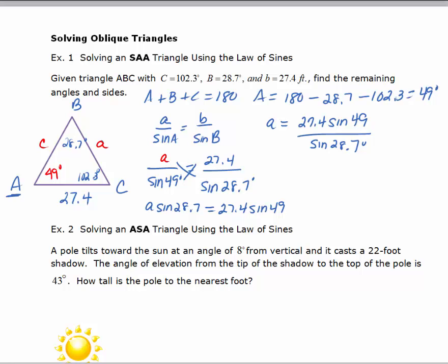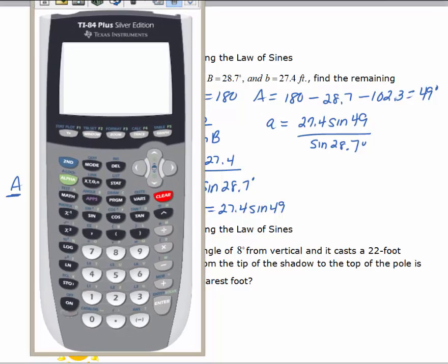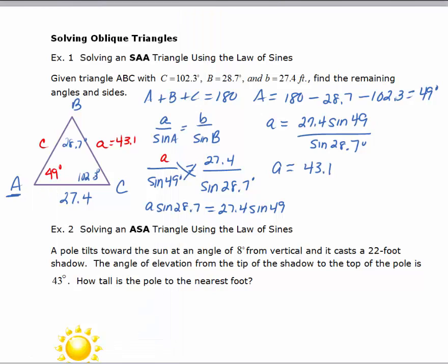Let's use our calculator to evaluate a. I'm in degree mode, which I need to be. I'm going to get 27.4 times the sine of 49 degrees divided by the sine of 28.7. We'll round our answer to the nearest tenth. So we get 43.1 for side A, and that will be in feet.